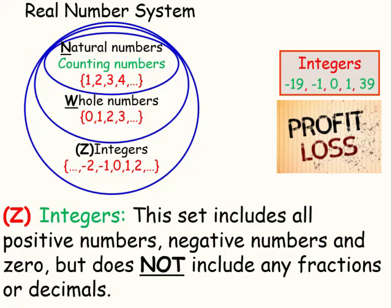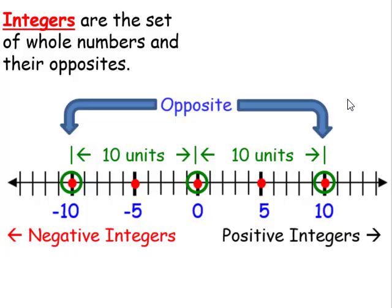Integers. The set includes all positive numbers, negative numbers, and 0, but does not include any fractions or decimals. Samples of integers are negative 19, negative 1, 0, 1, and 39. Another way of defining integers is the set of whole numbers and their opposites.